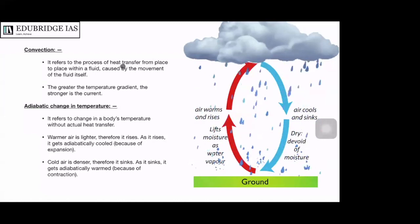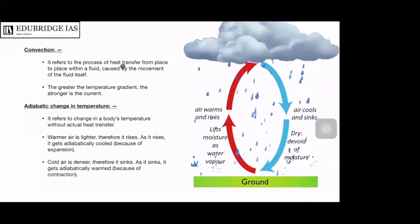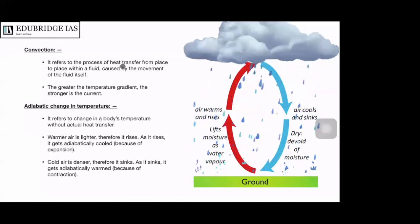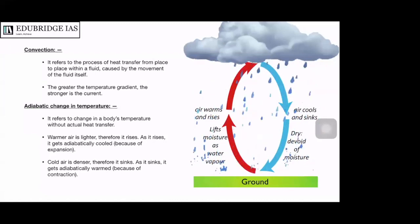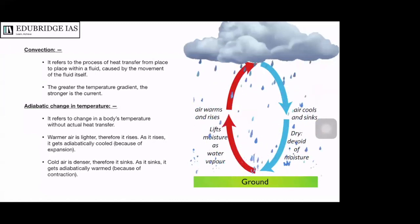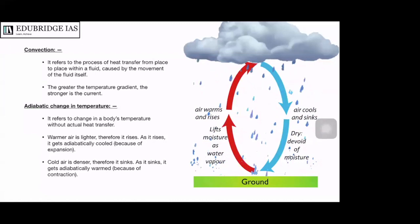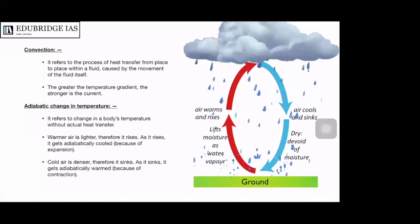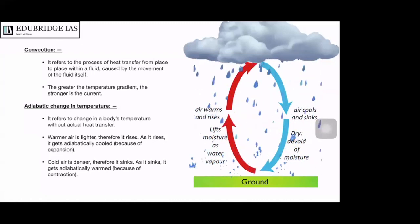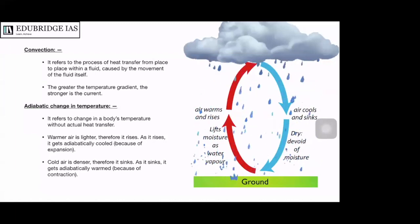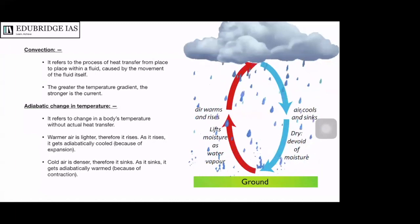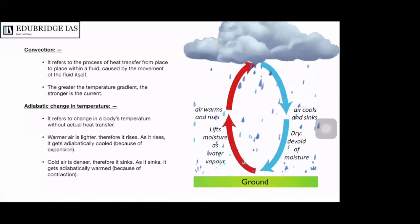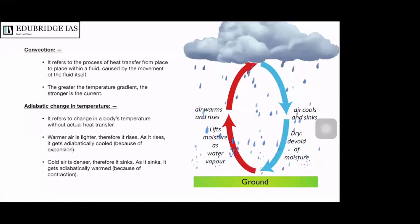Related to this is the concept of adiabatic change in temperature. It refers to the change in a body's temperature without actual heat transfer. Heat transfer can happen through radiation, conduction, or convection, but there is also an adiabatic change in temperature. This affects only fluids such as gases and liquids, and it happens through expansion and contraction.